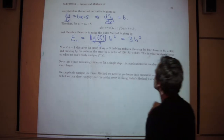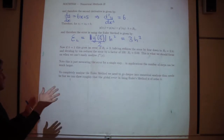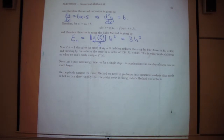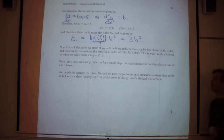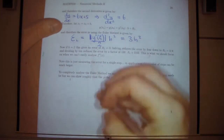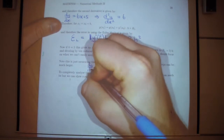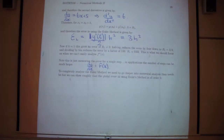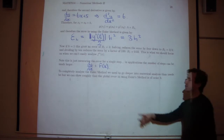This is just measuring the error for a single step. In applications we have many steps, so we need to understand that you pick up an error at every step. Adding up all those local errors gives what's called the global error. We'll now analyze this properly, restricting to the case where the derivative depends only on x.